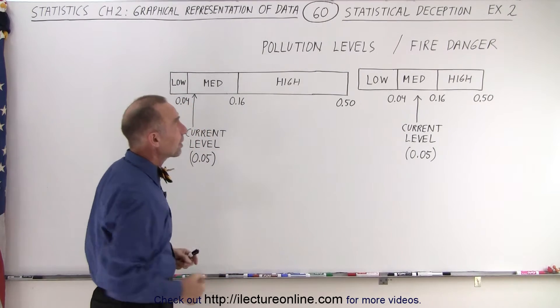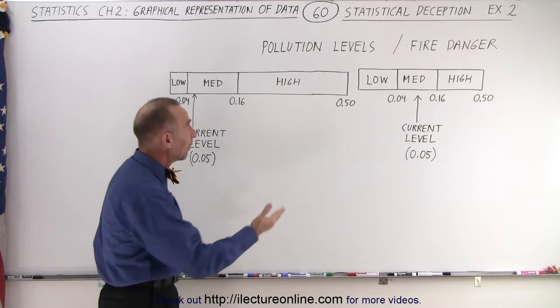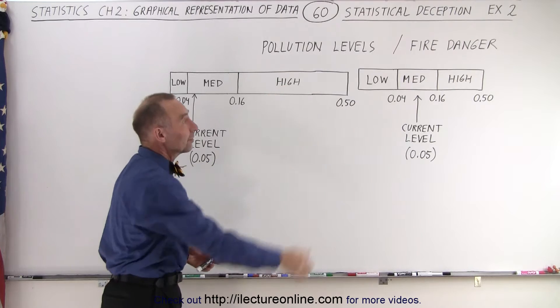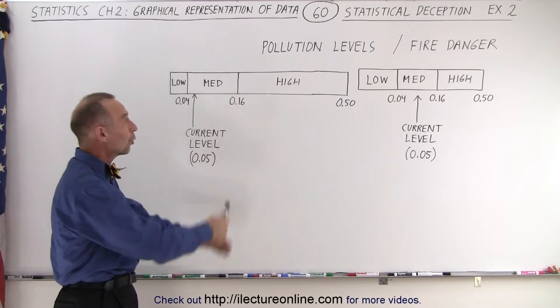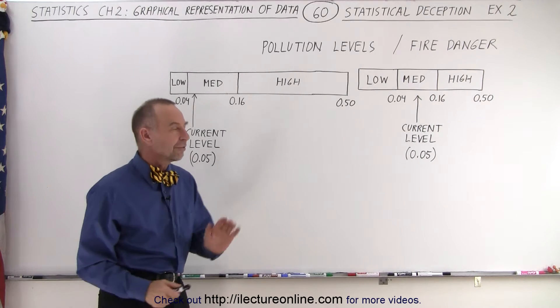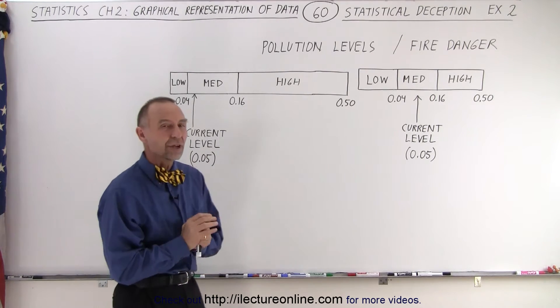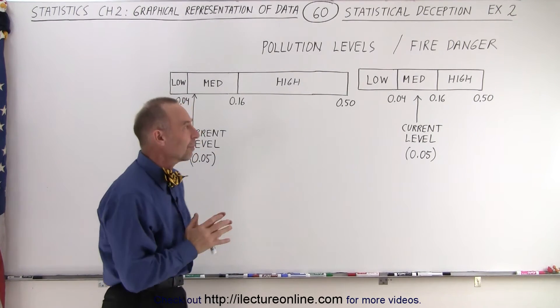These charts or these graphs right here could be representative of perhaps pollution levels or fire danger where it's categorized to be either low, medium, or high. Notice the graph on the right. What can you tell about it being kind of deceptive?